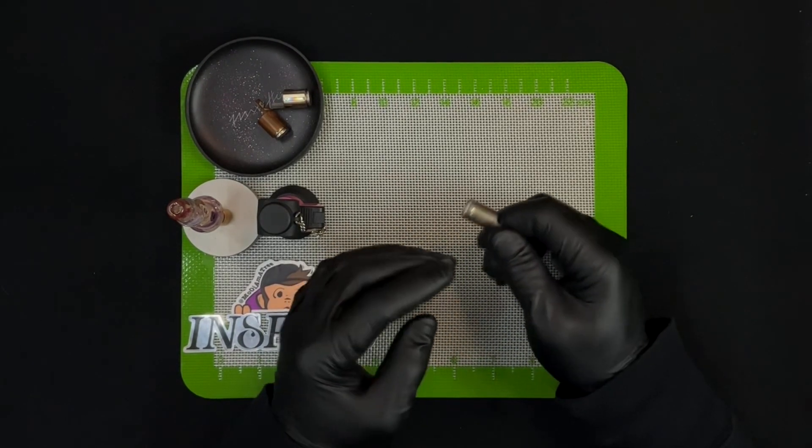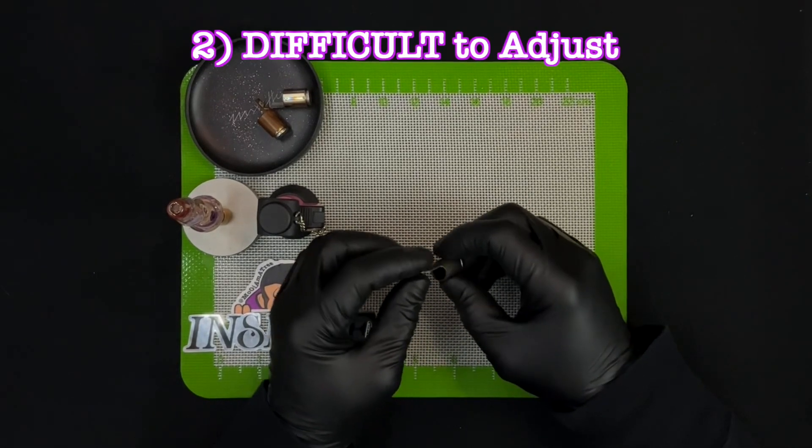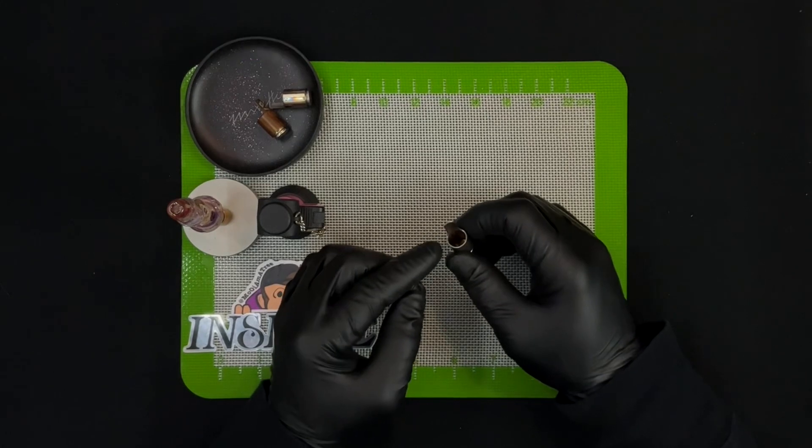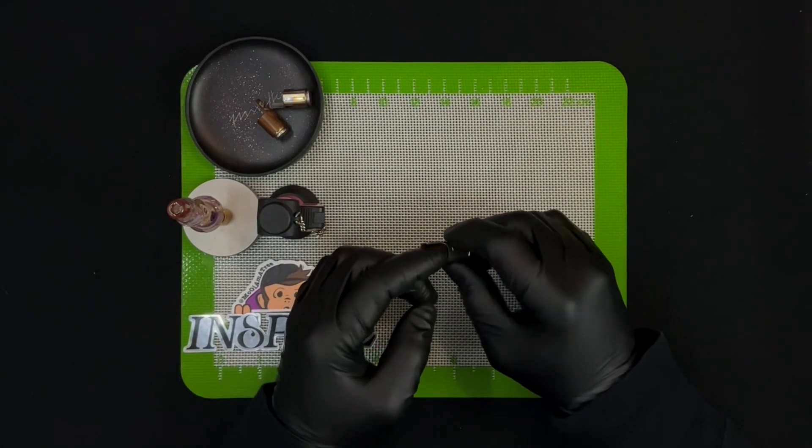The other thing with the armored cap is it is incredibly difficult to adjust. If it's tight on your tip, the way you have to adjust it is to cram something in there and pry it open. But if you pry it open a little too much and now it's loose, or you have another tip that is just a micron smaller than the tip you usually use it on...